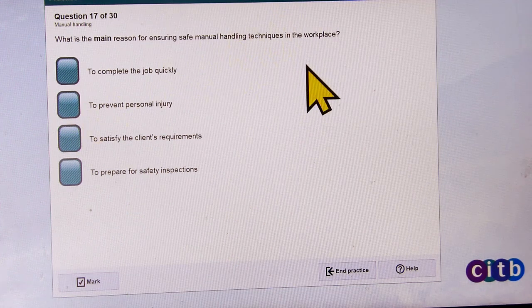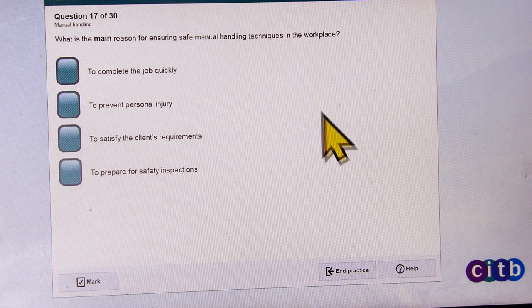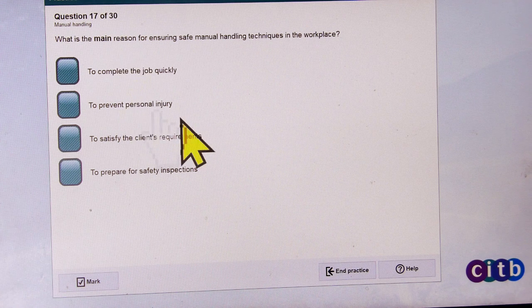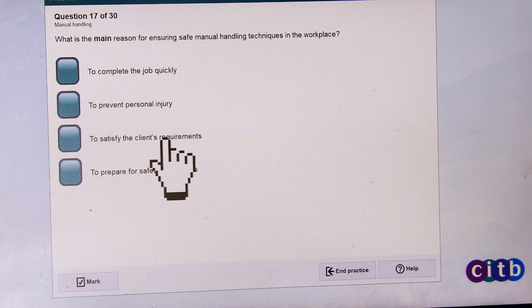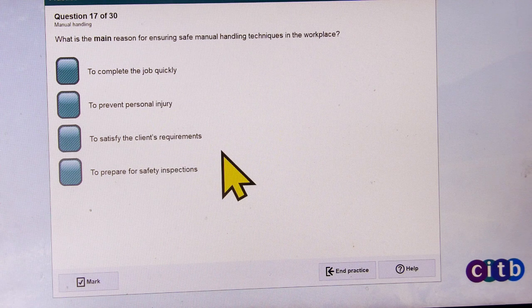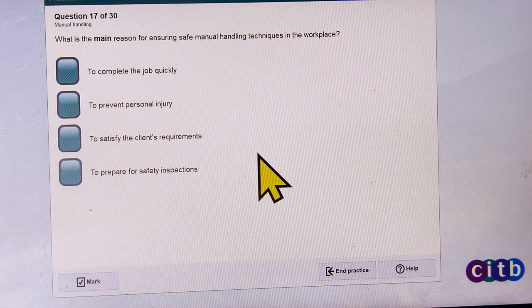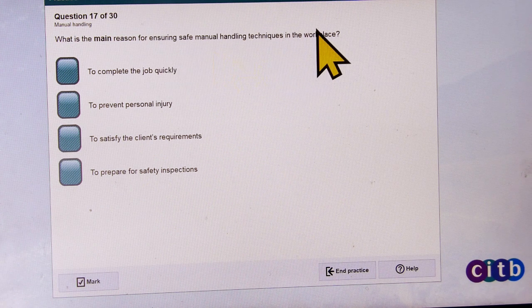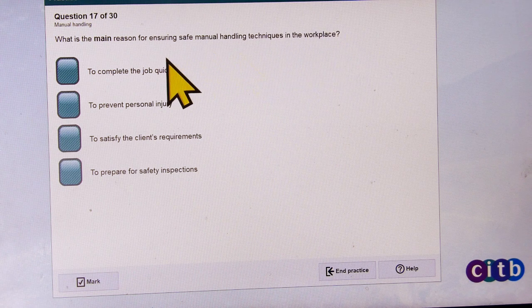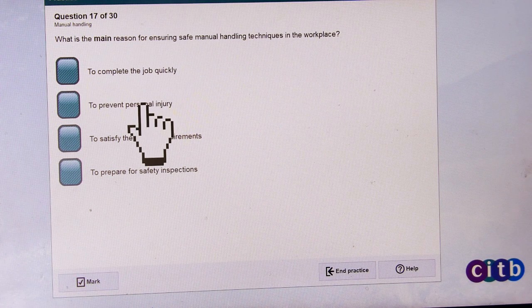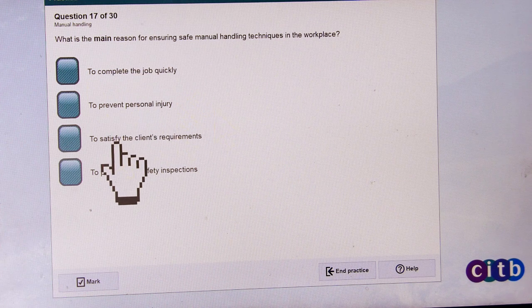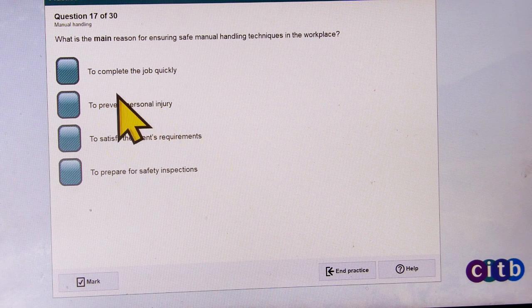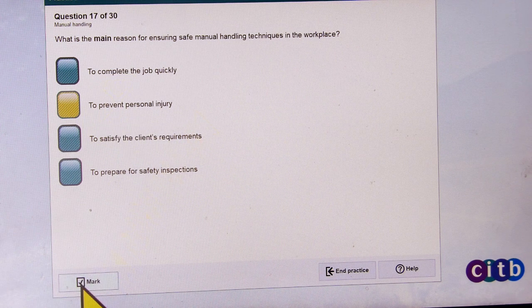What is the main reason for ensuring safe manual handling techniques in the workplace? To complete the job quickly, to prevent personal injury, to satisfy the client's requirements, to prepare for safety inspections. To prevent personal injury.